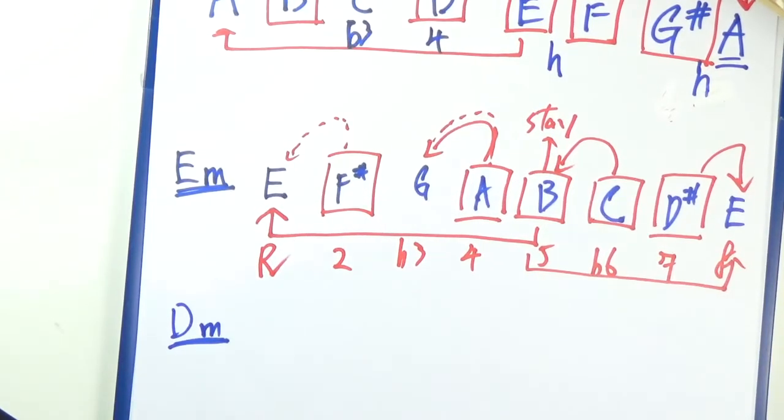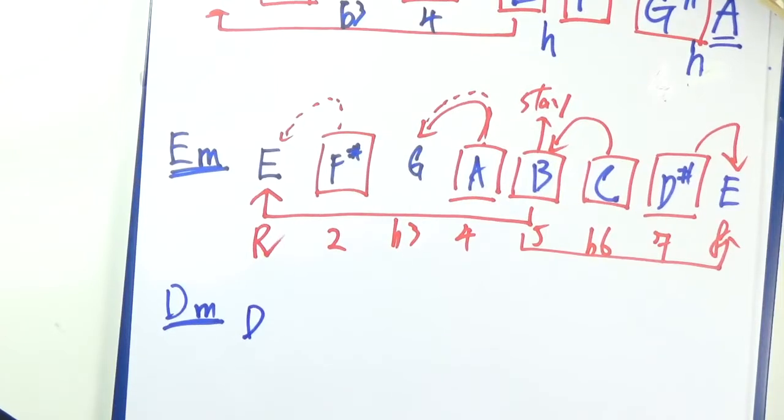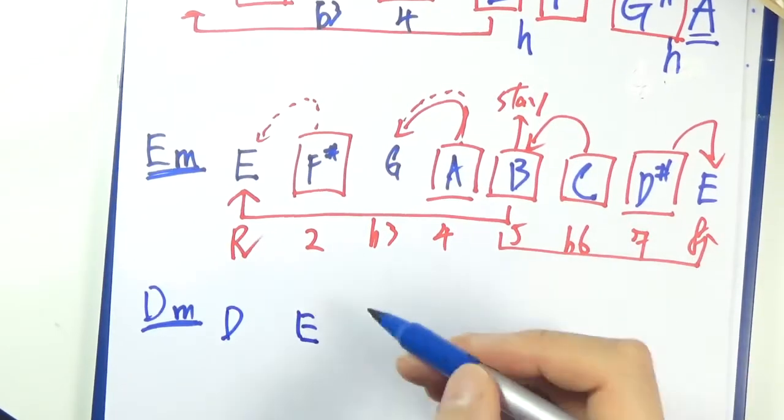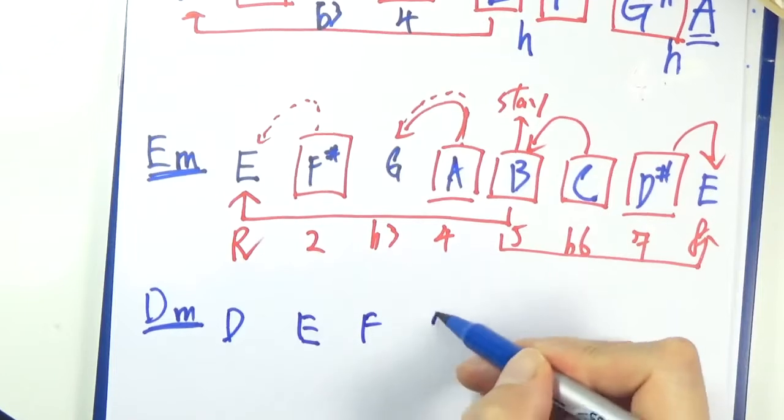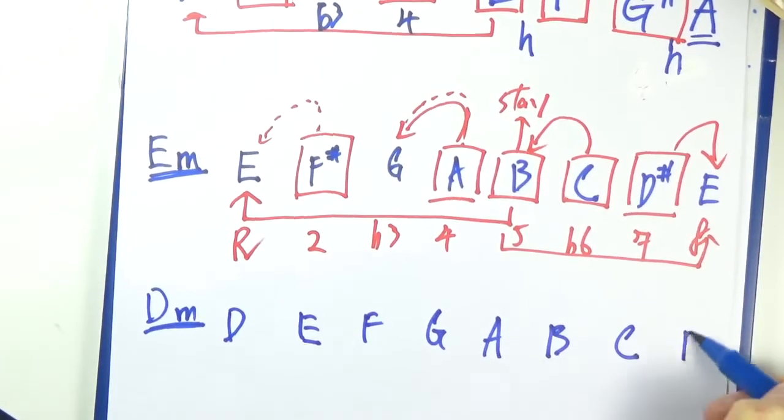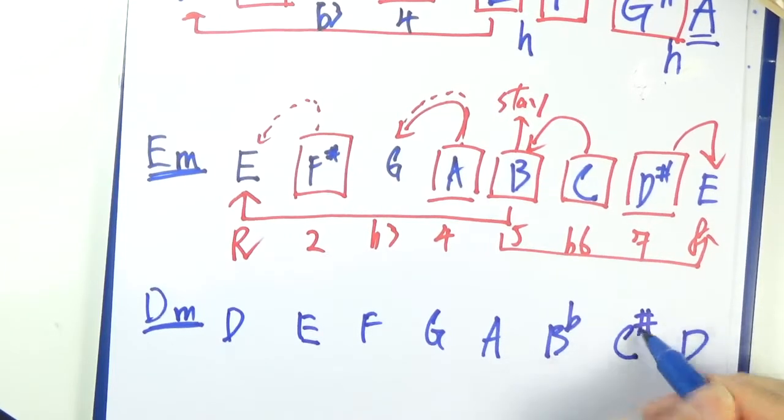Let's work out one more. Let's go to D minor. D, E, F, G, A, B, C, D, that should be B flat. Harmonic minor so C sharp here.